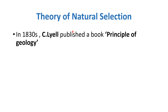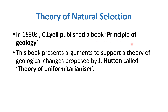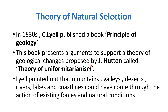The theory of natural selection starts from the 1830s. Charles Lyell published his book called Principles of Geology, which presents arguments to support the Theory of Uniformitarianism proposed by James Hutton. Lyell pointed out that mountains, valleys, deserts, rivers, lakes and coastlines could have come about through the action of existing forces and natural conditions — meaning the Earth was not always in this form, but developed with the passage of time.